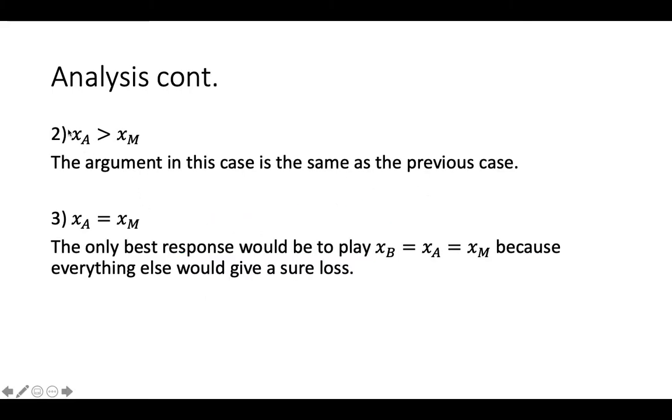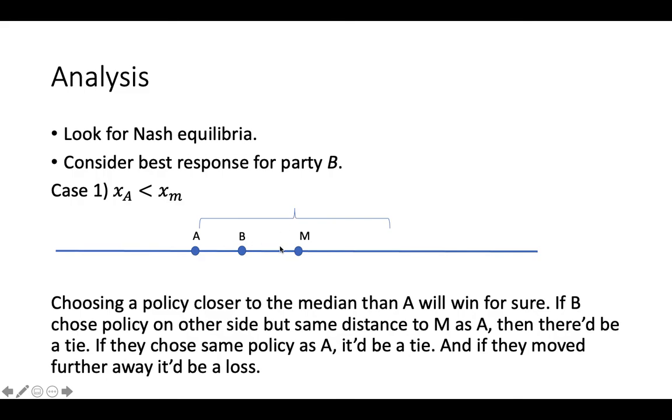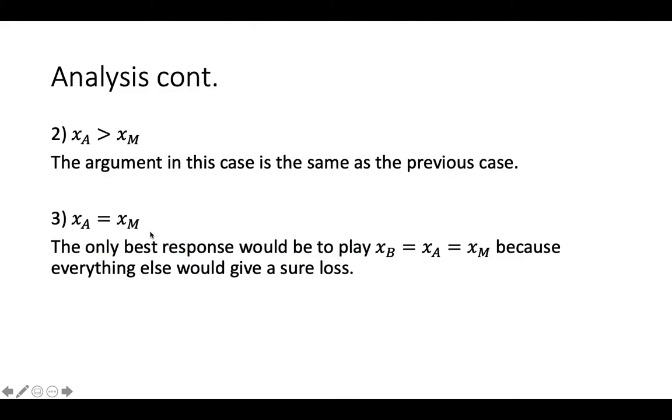In the case that A plays a policy greater than the median, the argument's the same as this. You just flip everything to the other side. And when A plays a policy that is exactly the same as the median, the only best response is going to be to also play that, because everything else would be a probability of winning of zero. At least they would have a one-half probability if they chose the same strategy.